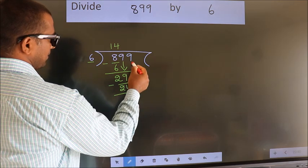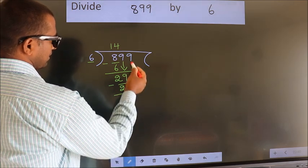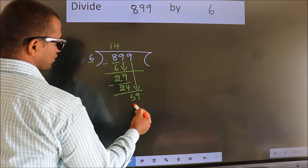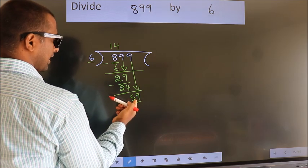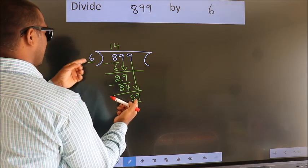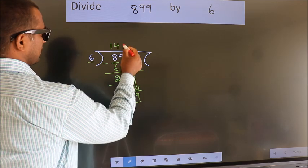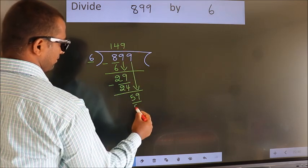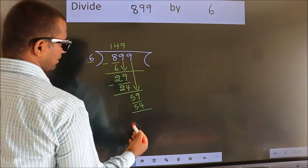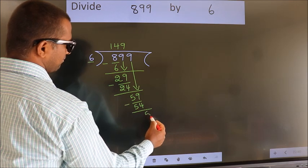After this, bring down the next number. So 9 down. So 59. A number close to 59 in 6 table is 6 nines, 54. Now we subtract. We get 5.